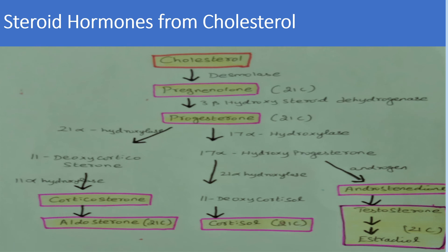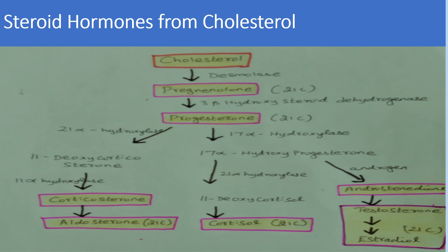From progesterone, we also get androsterone and testosterone — the androgens, which are male sex hormones produced for the development of secondary sexual characteristics in males. Cortisol, a glucocorticoid, is very important for carbohydrate and protein metabolism. We also get estrogen and progesterone from cholesterol. The estrogens — estradiol, estrone, and estriol — are female hormones which promote female characteristics and are required for implantation of the fertilized ovum and growth of the uterus during pregnancy.